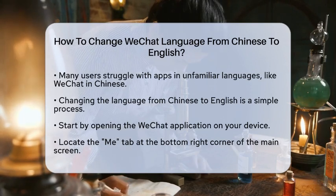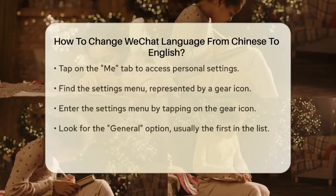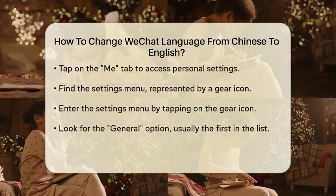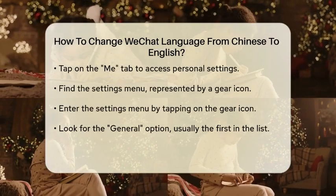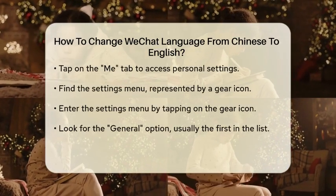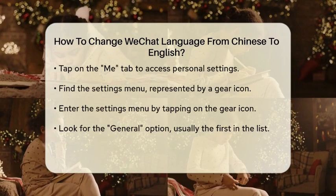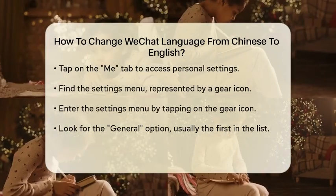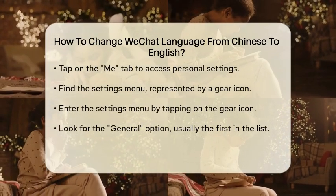First, open the WeChat application on your device. Once you are on the main screen, look for the Me tab, which is typically located at the bottom right corner of the screen.